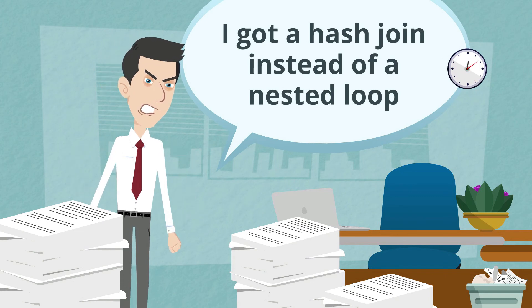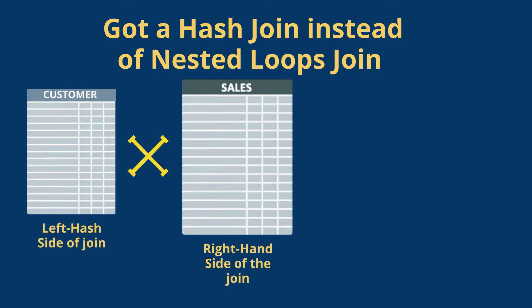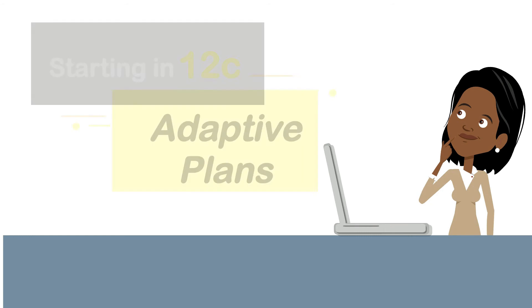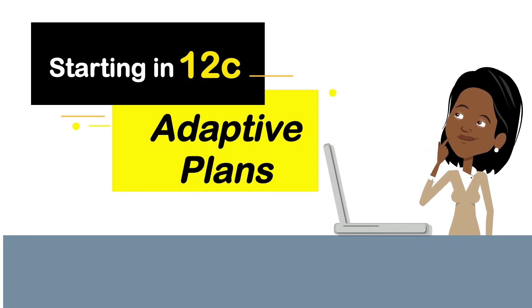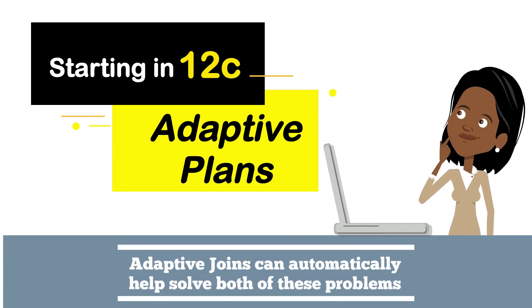A hash join being chosen instead of nested loops is less common, but it does happen — often when rows coming out of the left-hand side of the join are actually clustered in some ordered fashion, so the number of IOs needed to read that data is far less than the optimizer estimates. Starting in 12C, we introduced something called adaptive plans, and adaptive join methods will actually fix or help this scenario.